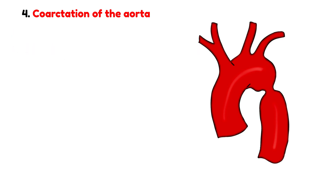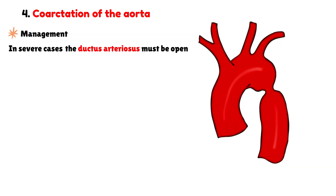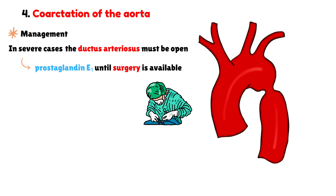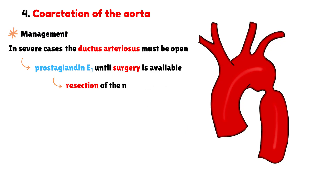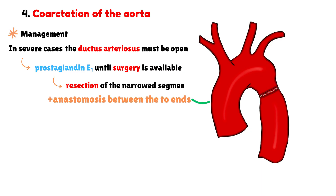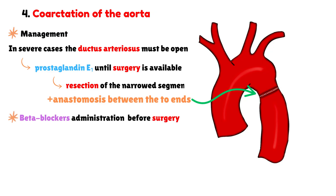In severe cases, especially in infants, survival may depend on keeping the ductus arteriosus open. Therefore, the initial treatment involves the administration of prostaglandin E1 until surgery can be performed. The definitive treatment consists of surgical resection of the narrowed segment with end-to-end anastomosis. As a precautionary measure, beta blockers are administered before surgery to reduce the risk of bleeding, particularly intracranial hemorrhage.